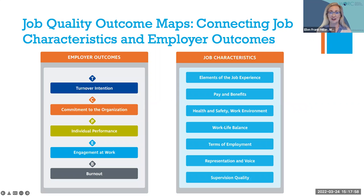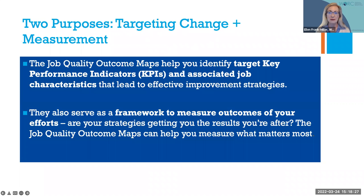Now let's take a look at the Job Quality Outcome Maps. My research team did an extensive review of decades of organizational research to identify correlations between employers' KPIs — their key performance indicators — and job characteristics. The maps are based on findings from over 3,000 peer-reviewed scientific studies. The maps serve two purposes: first, to help employers focus on the KPIs they want to impact by improving job quality, and second, to act as a framework to measure outcomes — in other words, to measure whether your efforts are getting you the results you want.